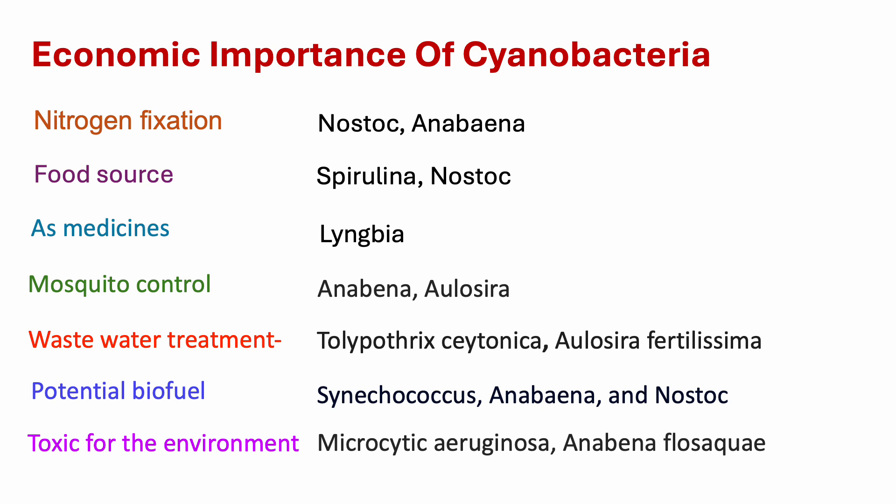Mosquito control: several species of cyanobacteria are used to prevent the growth of mosquito larvae — for example, Anabaena and Aulosira. Wastewater treatment: blue green algae can contribute to wastewater treatment by absorbing nutrients such as nitrogen and phosphorus. Tolypothrix and Scytonema are used for industrial wastewater treatment, and Aulosira fertilissima for fish pond discharge treatment. Potential biofuel: their rapid growth rates and ability to survive in various conditions make them attractive candidates for renewable fuel production; Chroococcus, Anabaena, and Nostoc are promising candidates. Some cyanobacterial species produce toxins harmful to aquatic animals — important toxin-producing species include Microcystis aeruginosa and Anabaena flosaquae.